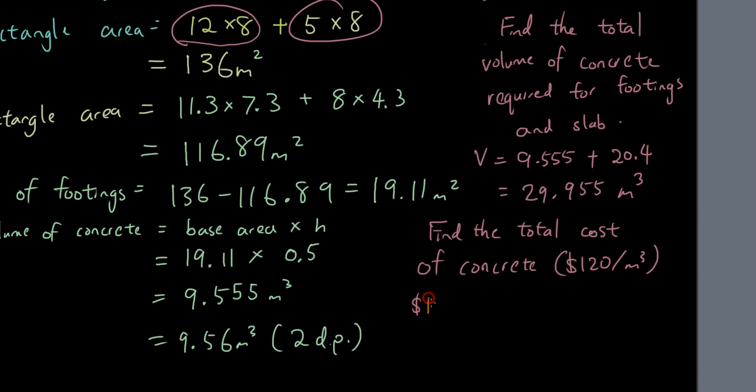So then you just go $120 times 29.955 and you will get $3,594.60. That is the total cost of concrete required for the footings and slab of this house.